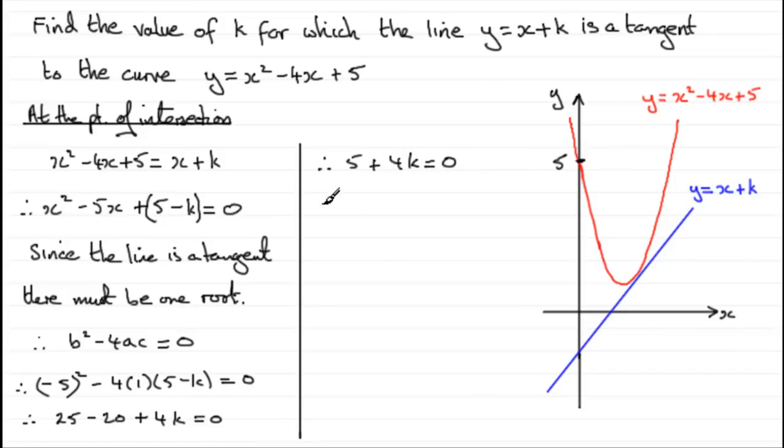If we subtract 5 from both sides, we get 4k equals minus 5. Divide both sides by 4, and we get k equals minus 5 quarters, or minus 1 and a quarter. I'm going to leave it as minus 5 quarters though.